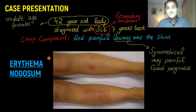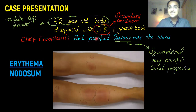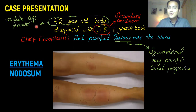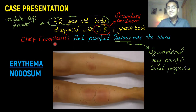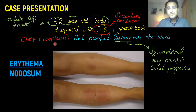Erythema nodosum is a condition that is mostly found secondary to other diseases, like SLE and other autoimmune diseases. These autoimmune diseases are more common in middle-aged females, so this patient is a case of erythema nodosum.